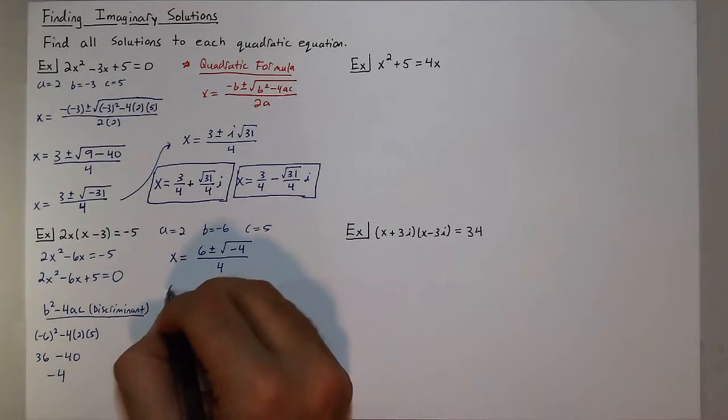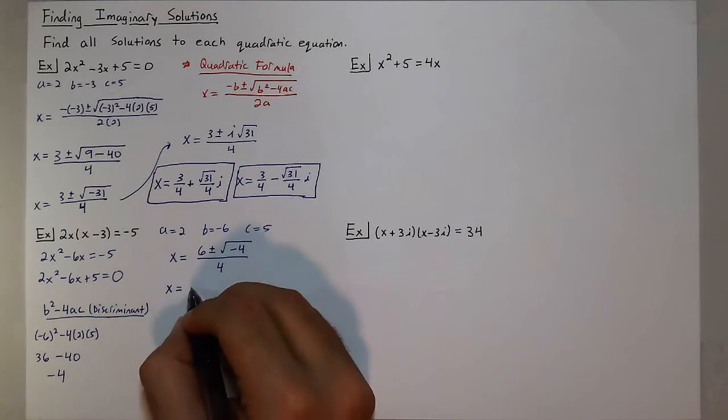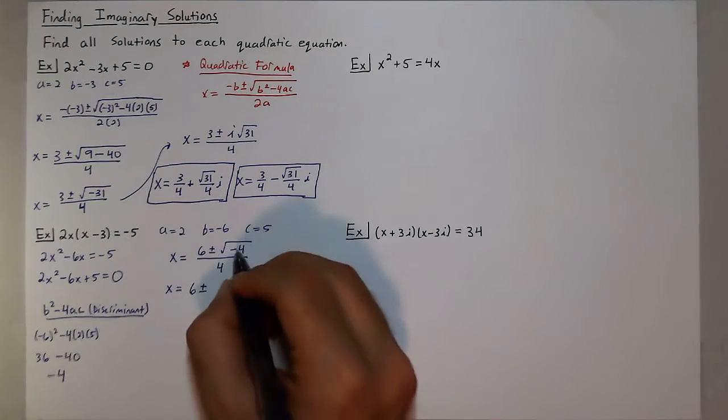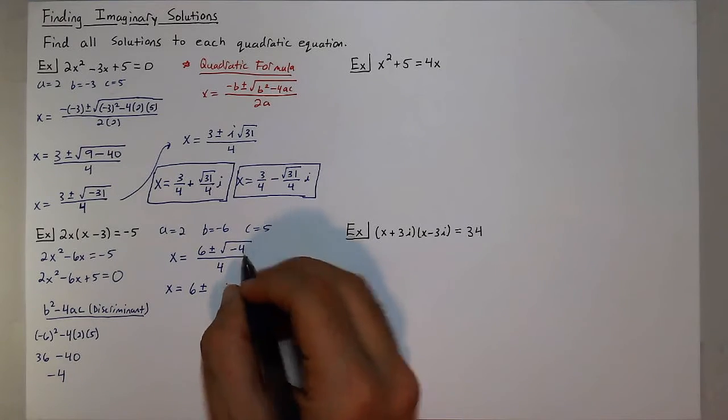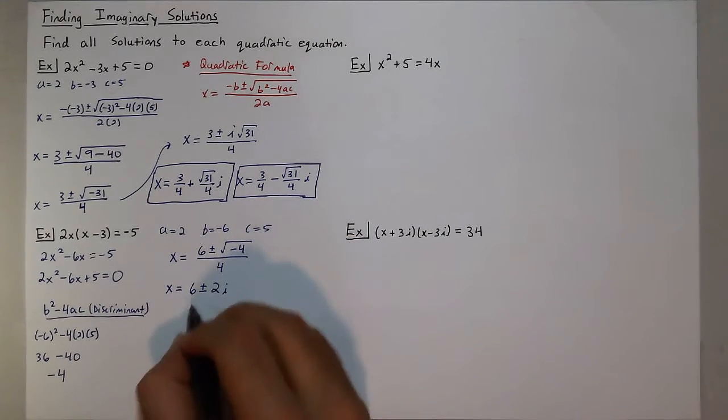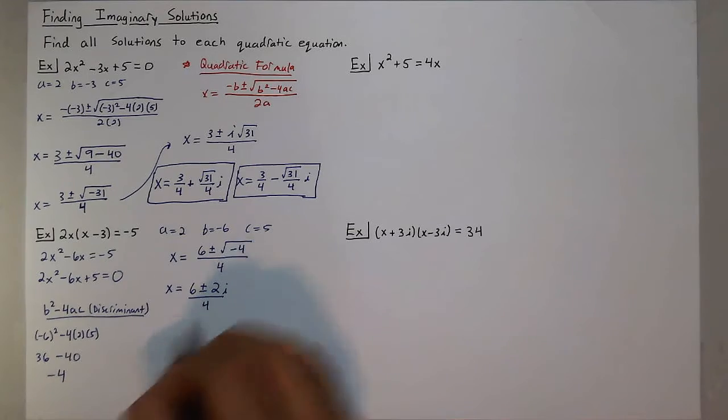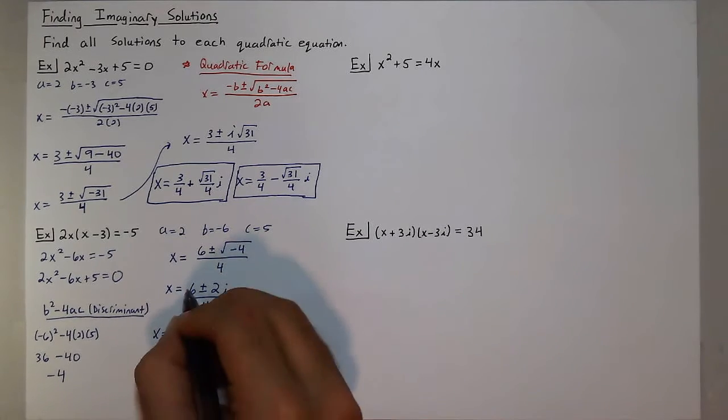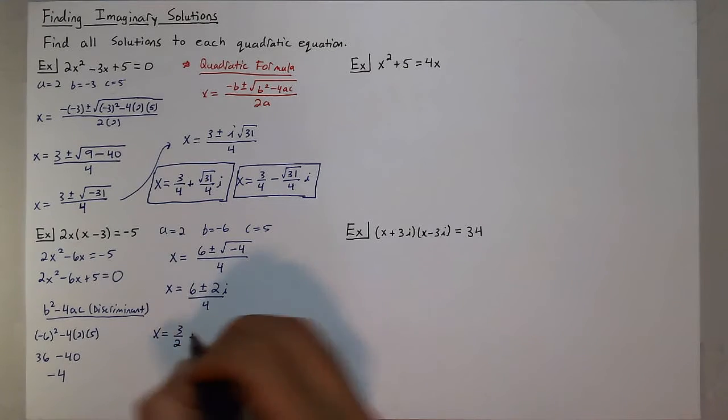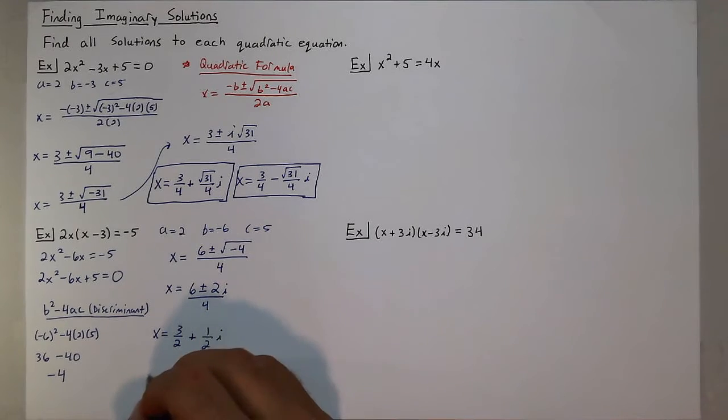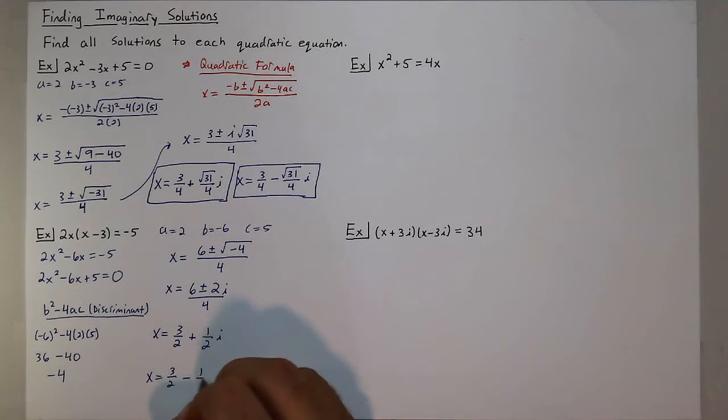Now simplifying, I get x equals 6 plus or minus the square root of negative 4, so I know it's an imaginary number, and 4 is also a perfect square, so I get 2i all over 4. So my two solutions are 6 over 4, which is 3/2, plus 2 over 4i, so 1/2 i, and x equals 3/2, 6 over 4, minus 1/2 i.